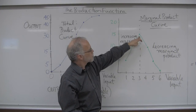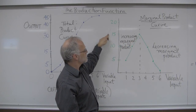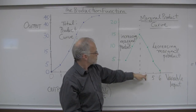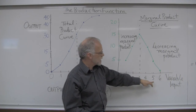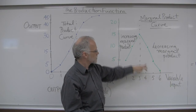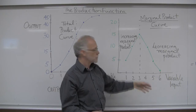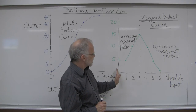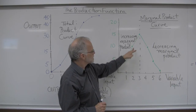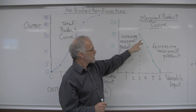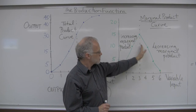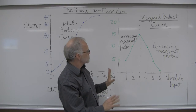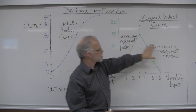If we add the third person, that person added even more to output — in this case 15 — so total product is 5 plus 10 plus 15, or 30. As we add additional units of variable input, we're getting less and less extra output — we're still getting something, but it's getting smaller and smaller. So we can describe a zone of increasing marginal product, and then beyond some point, a zone of decreasing marginal product.